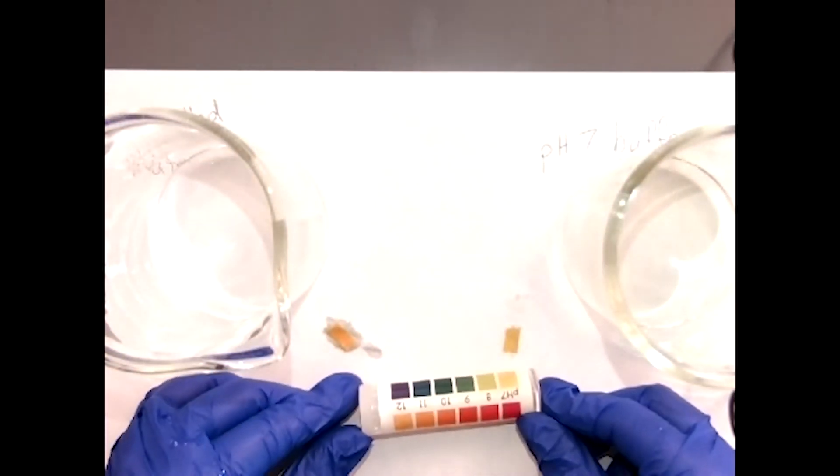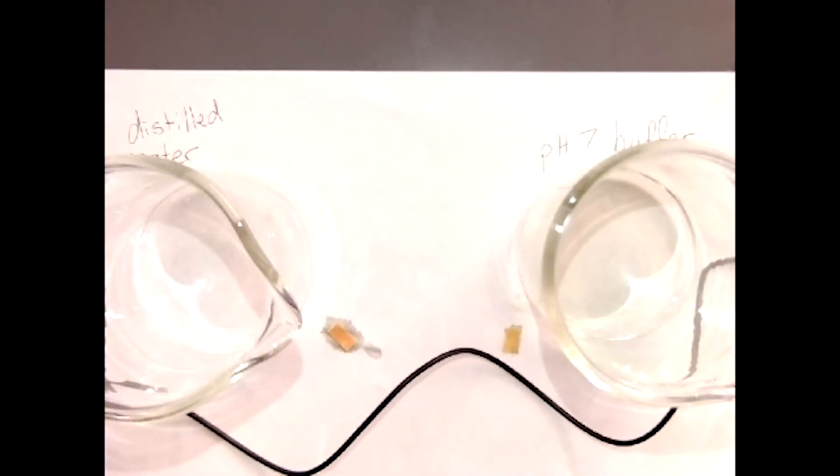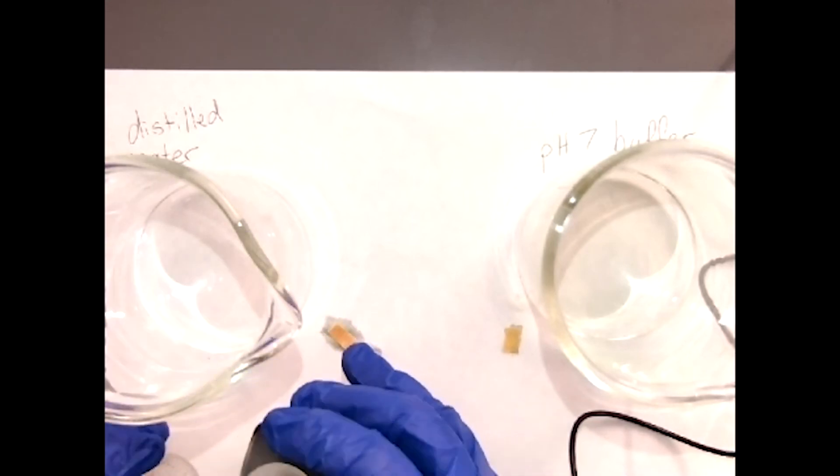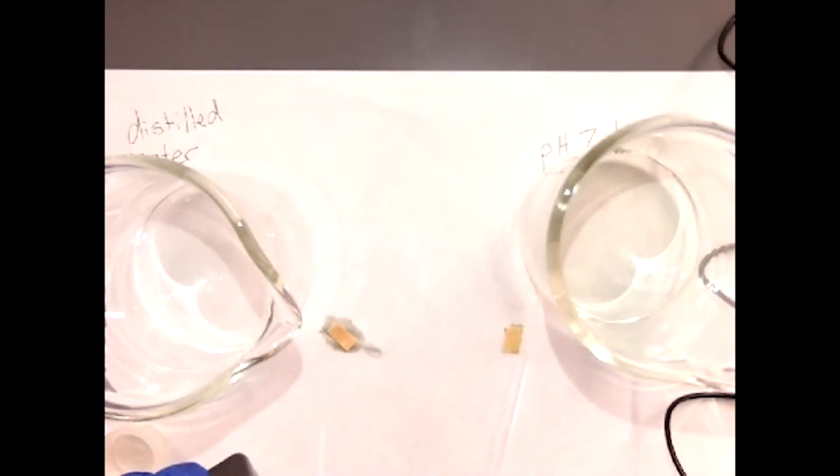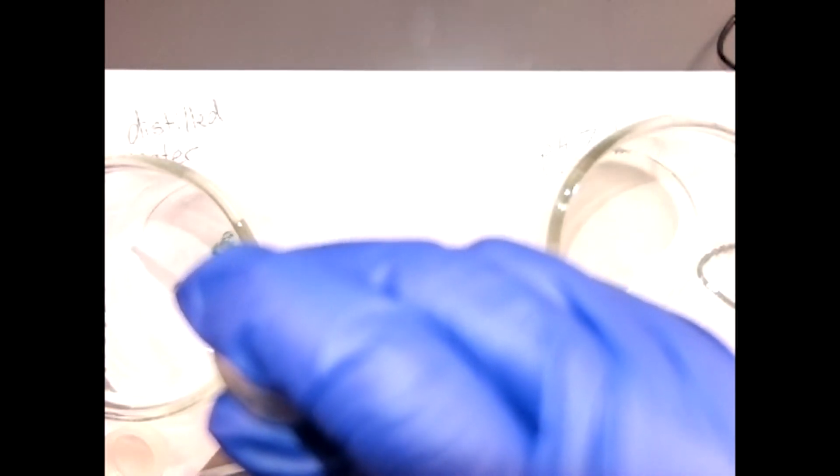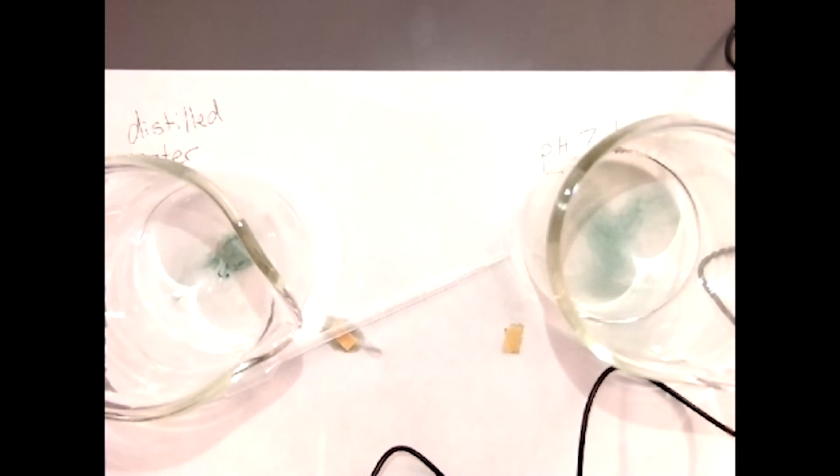We'll take six drops of bromothymol blue and add it to each beaker. Six drops in each one: one, two, three, four, five, six. One, two, three, four, five, six. Mix by swirling the liquid.